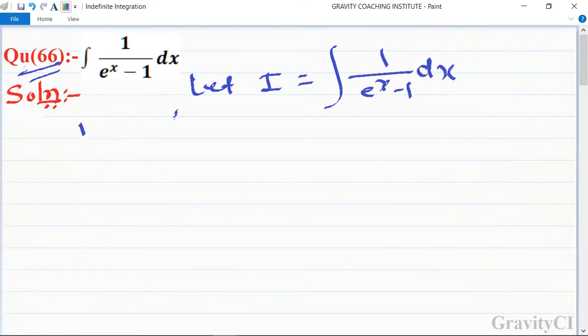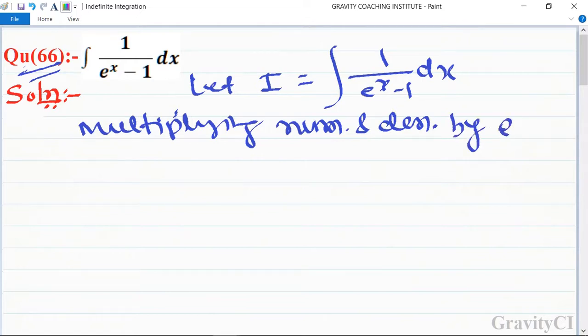Now, multiplying numerator and denominator by e^(-x), we get the integral of e^(-x) in the numerator and 1 - e^(-x) in the denominator, giving us ∫[e^(-x)/(1 - e^(-x))] dx.